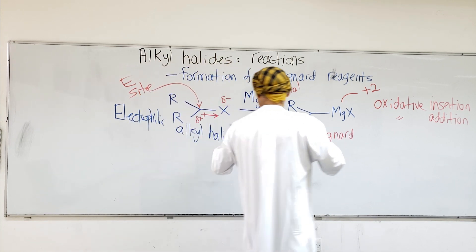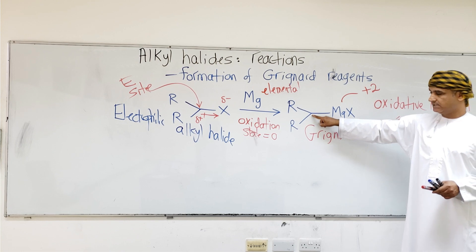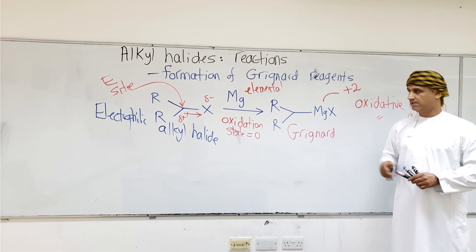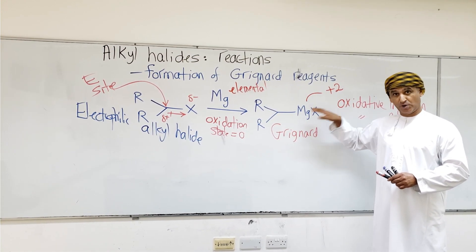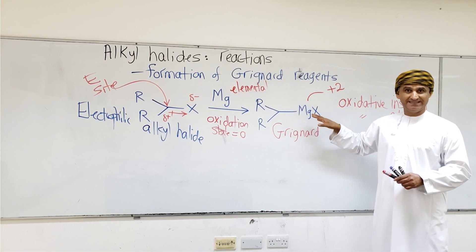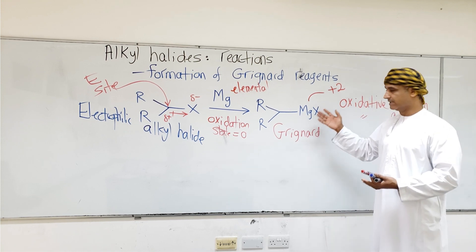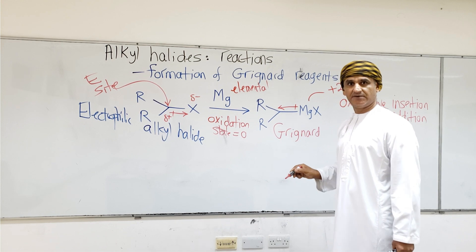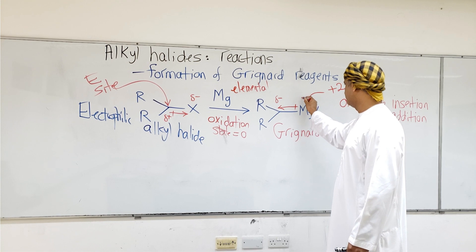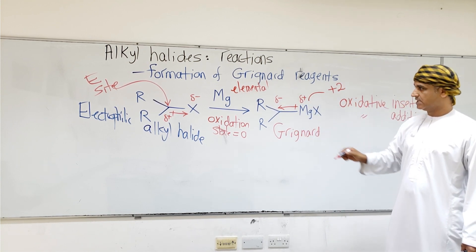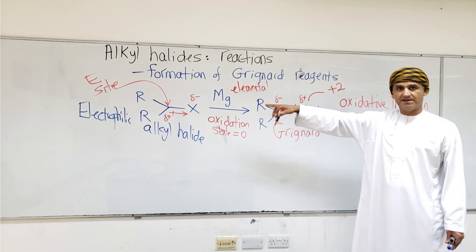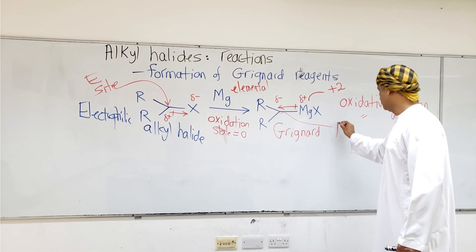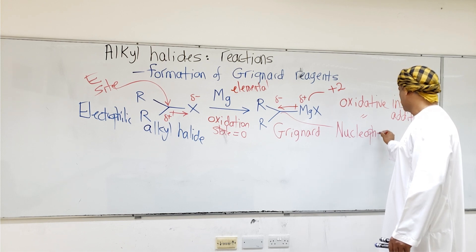Now, if you consider the Grignard reagent and look at that same carbon — which was the electrophilic site in the alkyl halide — that carbon is now bonded to magnesium. Magnesium is a metal. Carbon would pull electrons more toward itself in this bond than magnesium, because carbon is a non-metal and more electronegative. This leaves carbon with a negative partial charge and magnesium with a positive partial charge. So that same carbon, which was electrophilic in the alkyl halide, is now nucleophilic in the Grignard reagent.